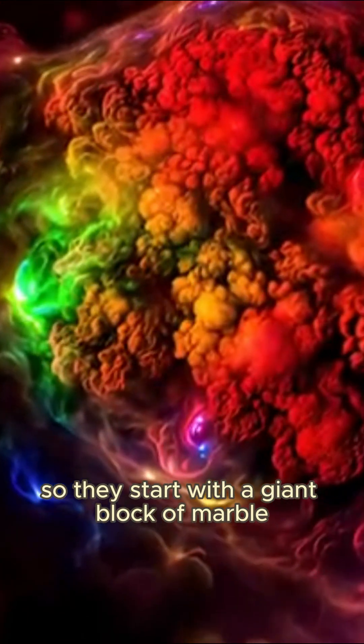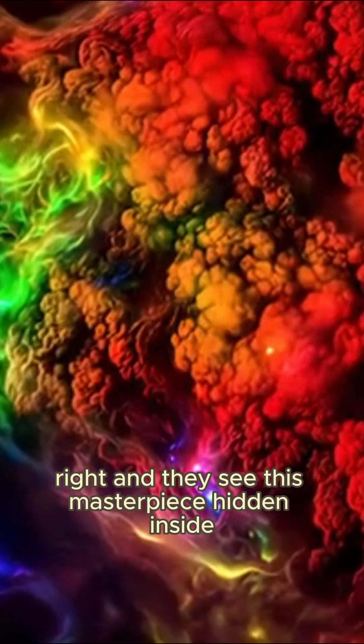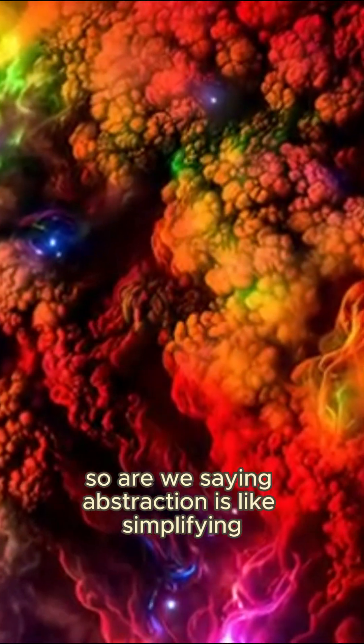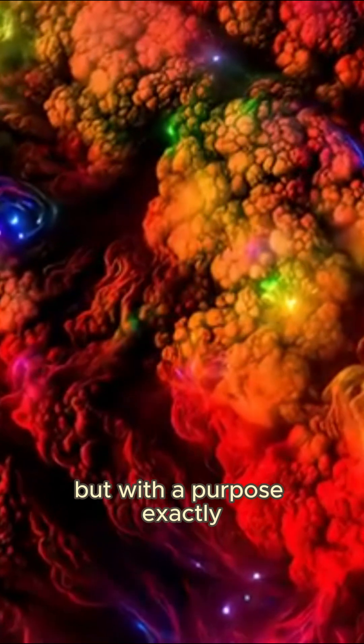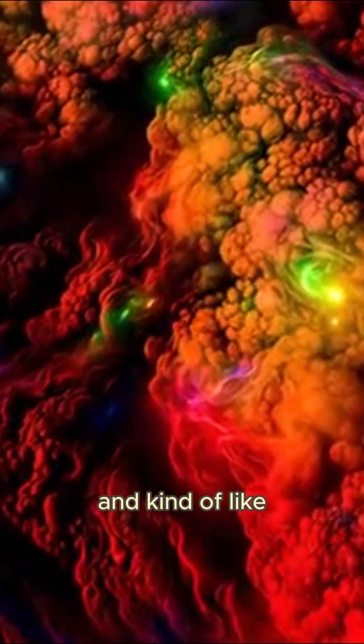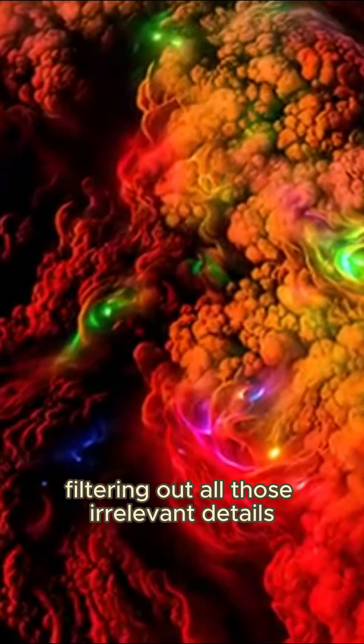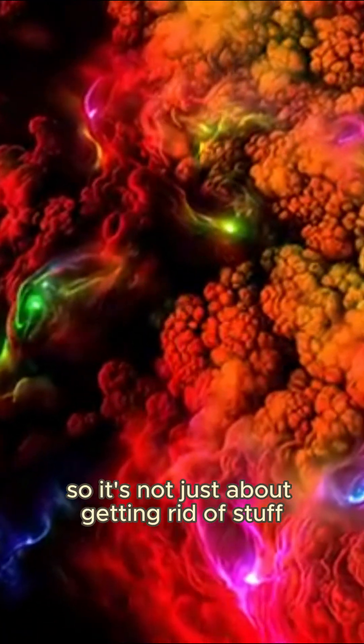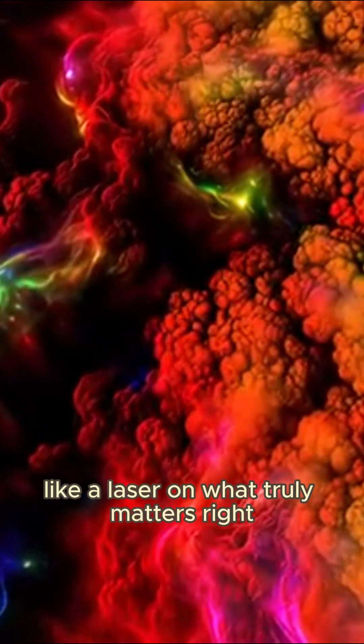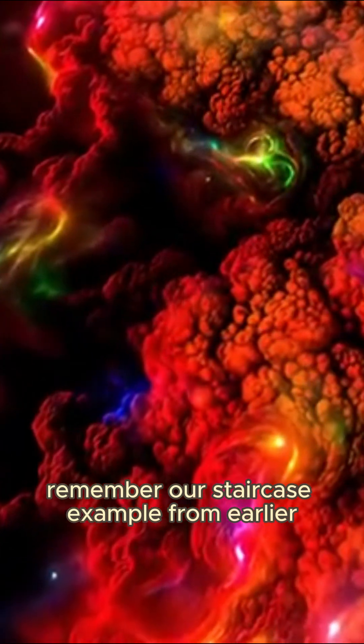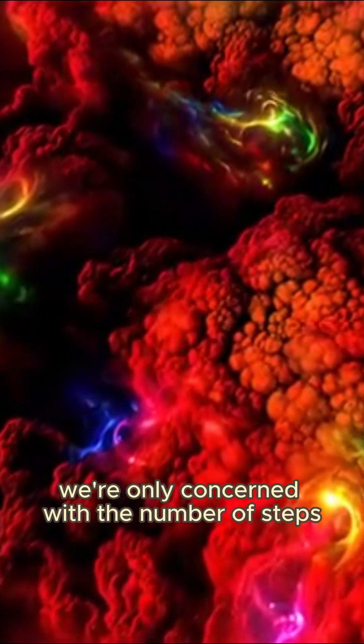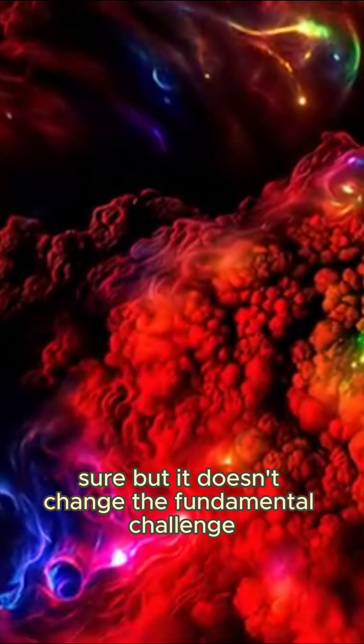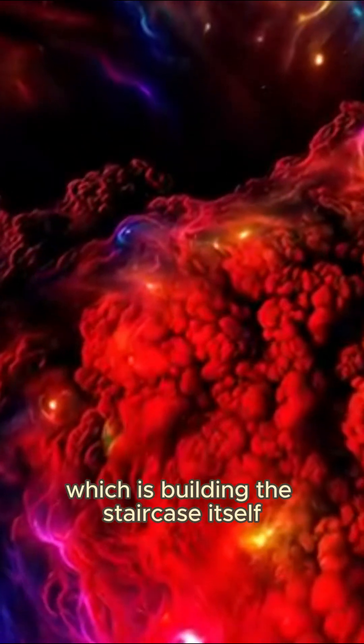So they start with a giant block of marble, right? And they see this masterpiece hidden inside. But first, they've got to chip away all that excess stone. Okay, I'm kind of with you. So are we saying abstraction is like simplifying but with a purpose? Exactly. It's about zeroing in on the essential elements of a problem and filtering out all those irrelevant details. Just like that sculptor, chipping away the excess stone to reveal the art underneath. So it's not just about getting rid of stuff. It's more about focusing like a laser on what truly matters. Right. Remember our staircase example from earlier? So with abstraction, we're only concerned with the number of steps, the height, the width. Those are the core elements, right? The color of the bricks, what they're made of. That stuff is interesting, sure. But it doesn't change the fundamental challenge, which is building the staircase itself.